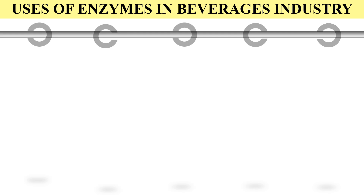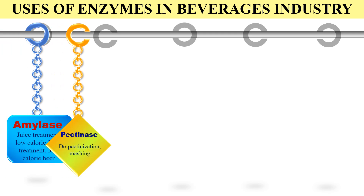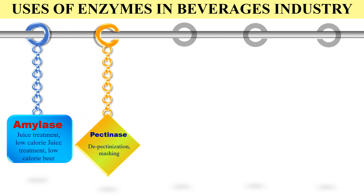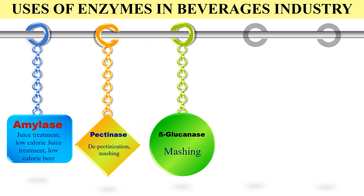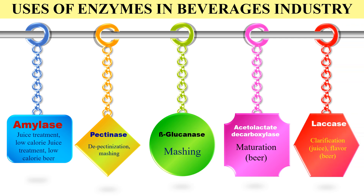The next use of enzymes is in the brewery industry. Amylases are used for the clarification of juice and to make low-calorie beer. Pectinase is used for de-pectinization and mashing. Beta-glucanase is used in the mashing process during beer formation. Acetolactate decarboxylase is used in the maturation process of beer. Finally, laccase is used for clarification and to enhance the flavor of beer.